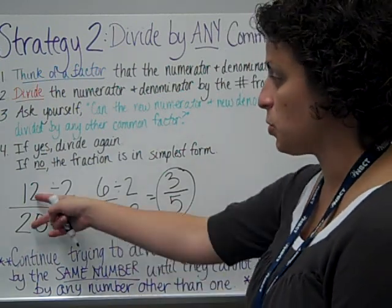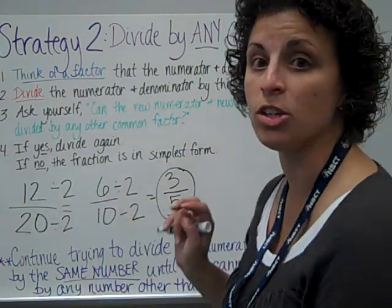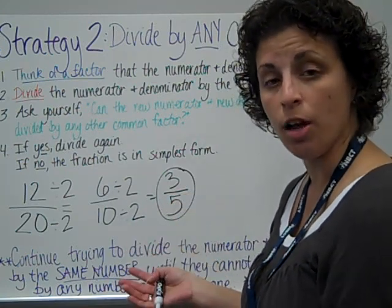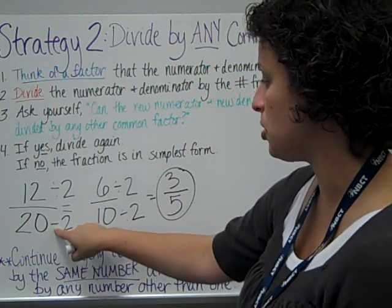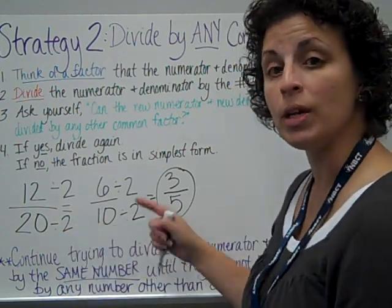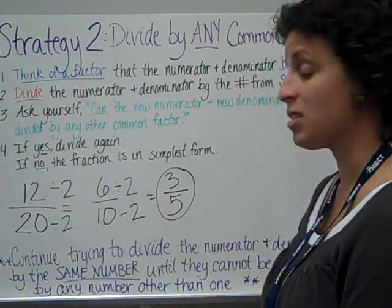Now this time, this was the same fraction as from the first strategy, by the way, which I divided by 4 and I was done all the way down to simplest form. This time, I had 2 steps. I divided by 2 here and then divided by 2 again. And that's okay, because I got the same answer.